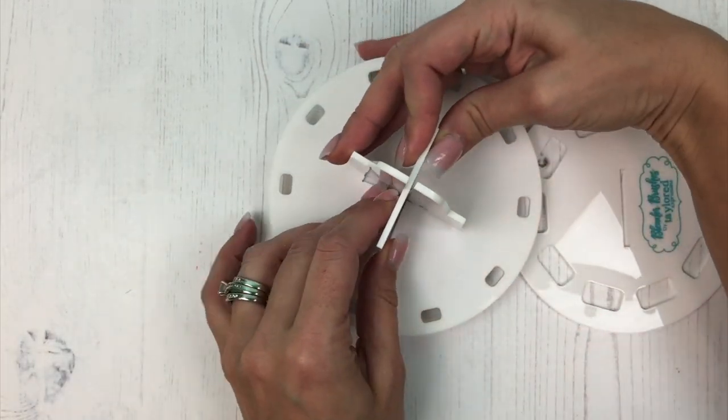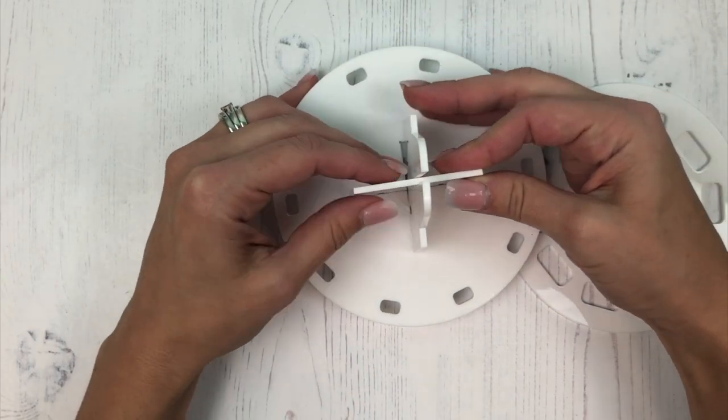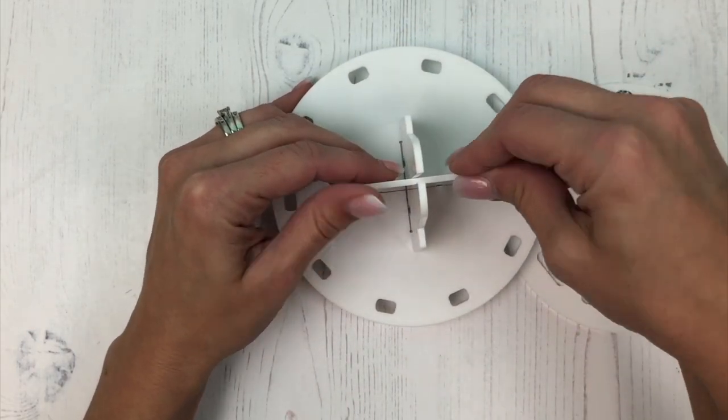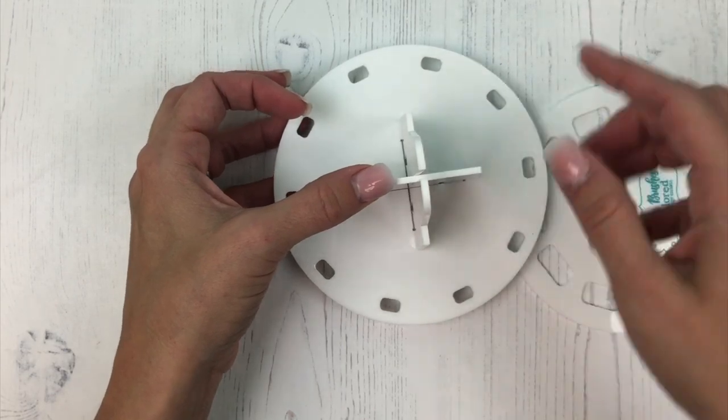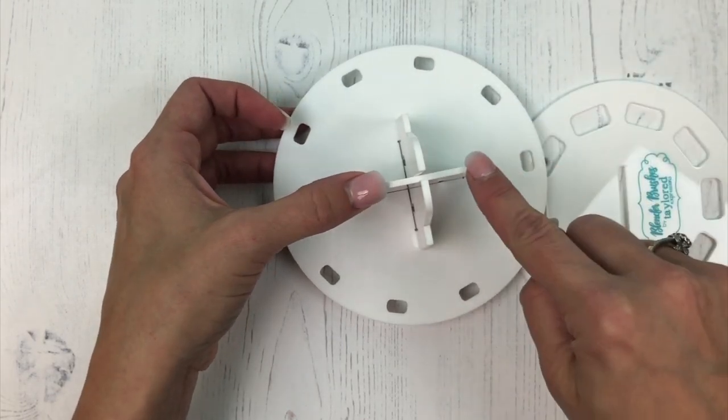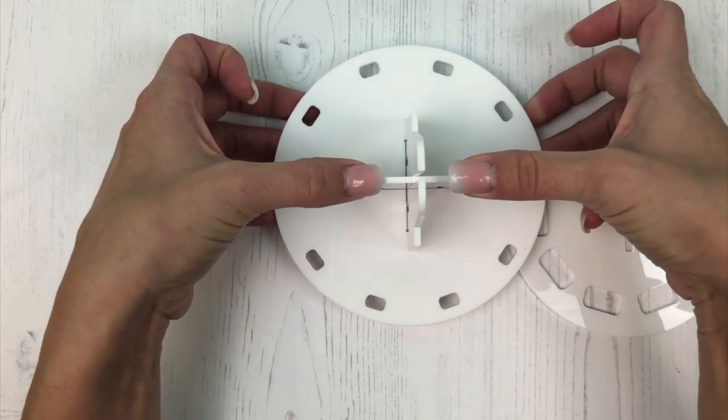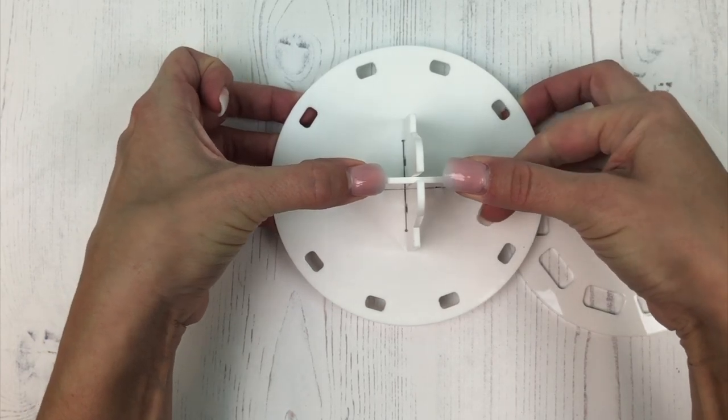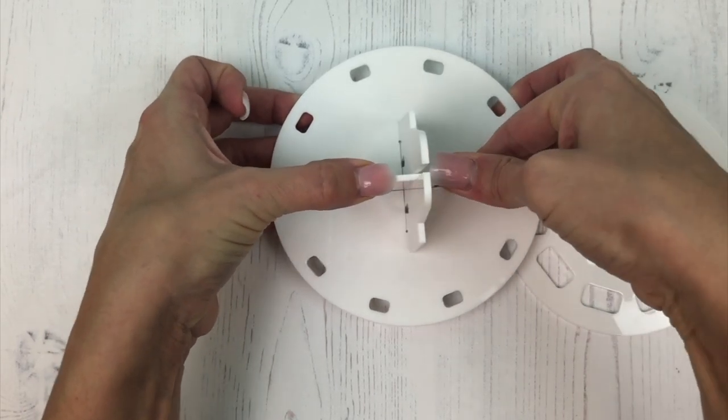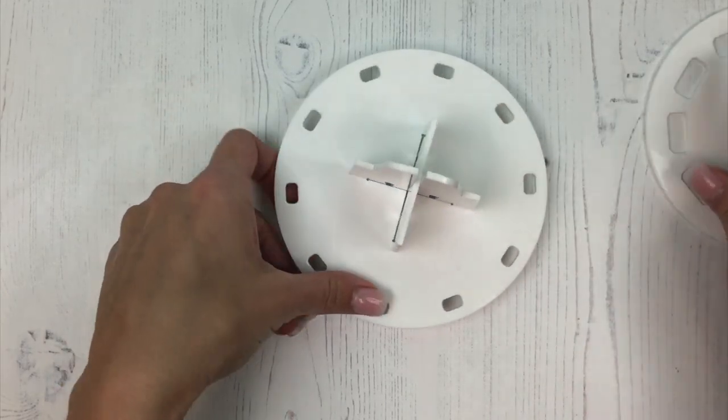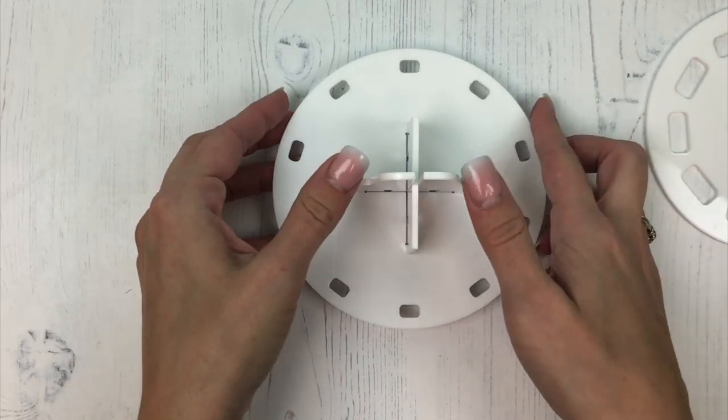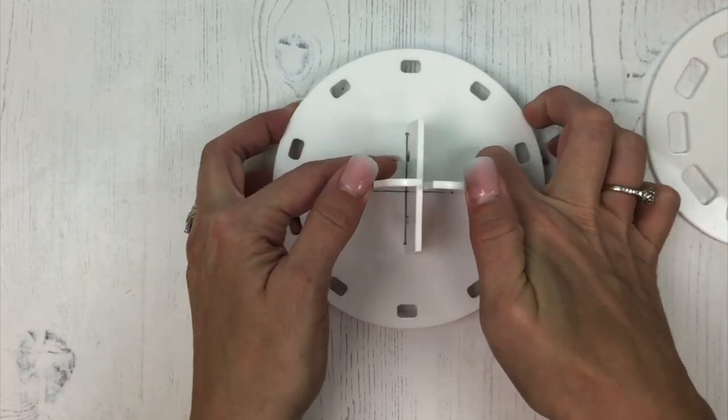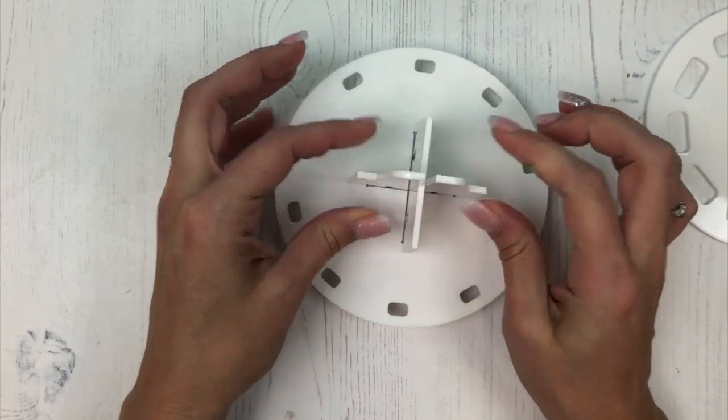There is only one way that it will fit into the base of the caddy. Once I have one side, I usually do the shorter side first, and I'll just put my thumbs on both sides and click that into place until it stays there, just like that.